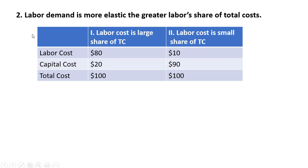Rule 2: Labor demand is more elastic the greater labor's share of total cost. We have two scenarios with two firms. In firm one, labor cost represents a large share or fraction of total cost. In firm two, labor cost is a small share of total cost.